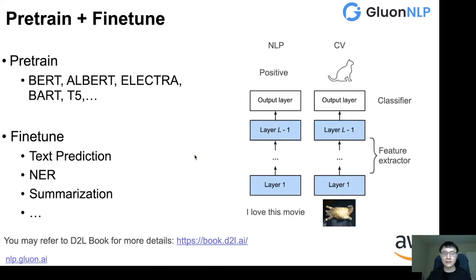So what is this pre-trained language model about? This is about a new way for solving NLP applications. We first pre-train the model on a large unlabeled corpus using different kinds of objective functions. And after that, we use this pre-trained model to solve downstream applications — for example, text classification, NER, and summarization. This makes NLP very similar to computer vision, because in computer vision we have ResNet to extract features from images, and now in NLP we have BERT-like models to extract representations from sentences.